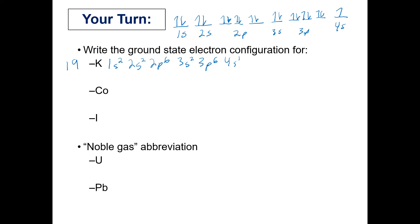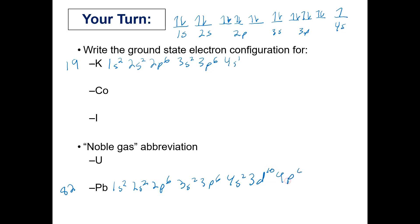We also need to discuss the noble gas abbreviation. For lead, which has 82 electrons, writing out the full configuration takes a long time: 1s², 2s², 2p⁶, 3s², 3p⁶, 4s², 3d¹⁰, 4p⁶, 5s², 4d¹⁰, 5p⁶, then 6s².